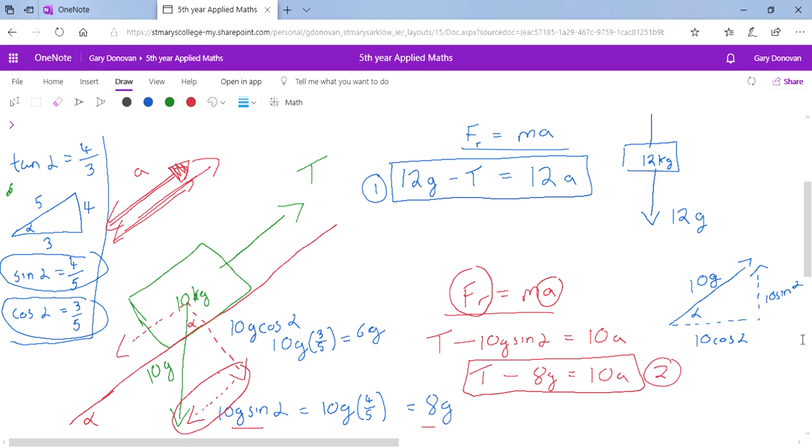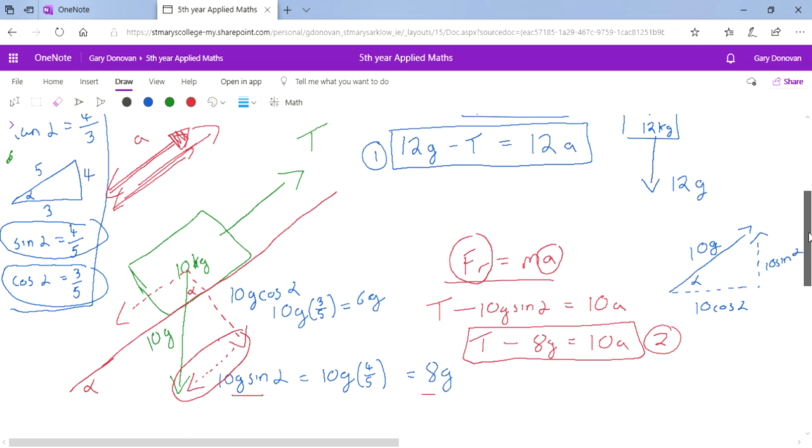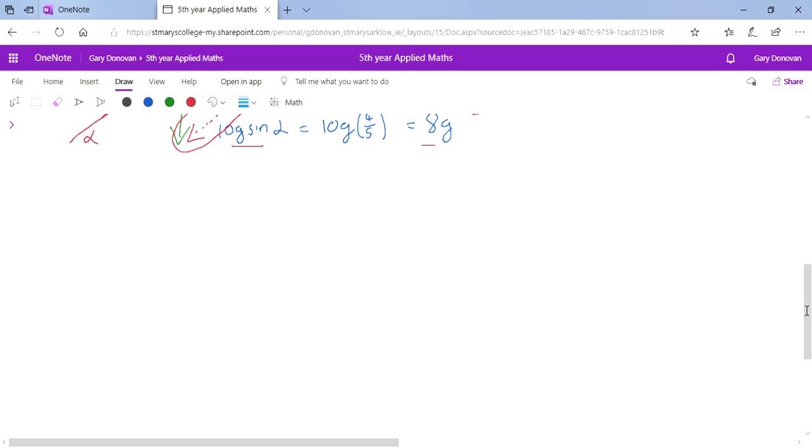So the tricky bit here really is the diagram. Because the rest of it now is just what you've done. We have two equations, 1 and 2, and we need to find out what acceleration is and what tension is.